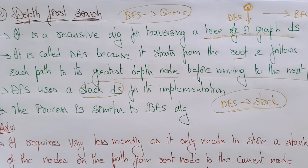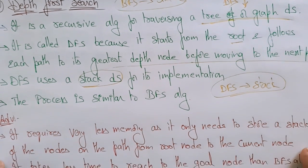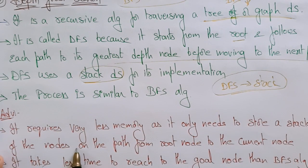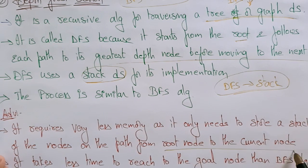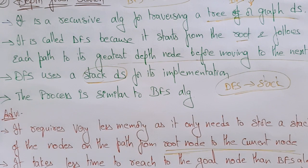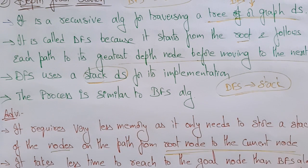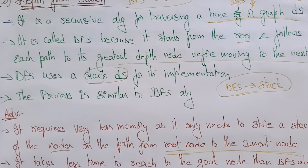What about the advantages? DFS requires very less memory as it only needs to store a stack of nodes on the path from the root node to the current node. Whereas in BFS you require more memory because at each level, all the nodes being visited until reaching the goal node must be stored in the queue. In depth first search, it requires less memory as it only stores the path from root to the current node.